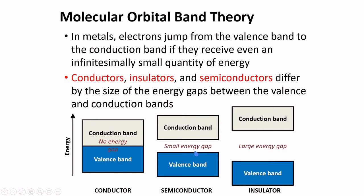In semiconductors, the energy gap is small enough that electrons can jump quite easily from the valence band to the conduction band. For insulators, the energy gap is large such that electrons cannot bridge the gap between the valence band and the conduction band.